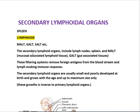We'll go through the lymph nodes first, then spleen, and then the lymphoid tissues. These secondary lymphoid organs act as filtering systems which remove foreign antigens from the bloodstream as well as from the lymph, evoking an immune response against those foreign particles or antigens. Secondary lymphoid organs are usually very small and poorly developed at birth and grow with age up to a maximum size only.